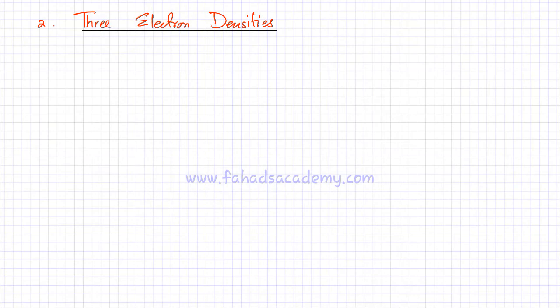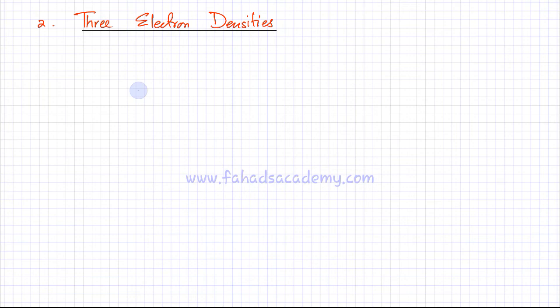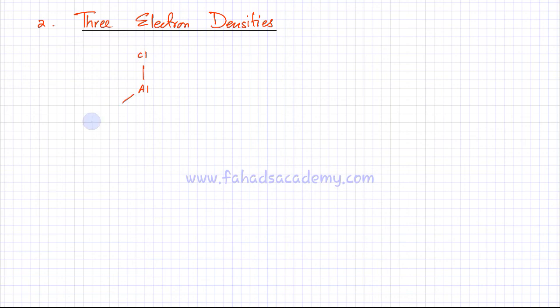Now we're going to predict the shape of molecules that have three electron densities, or three groups of electrons, whether they are bonds or lone pairs. I'm going to pick the first example of AlCl3. Aluminum is making three bonds with chlorine — three different chlorine atoms.